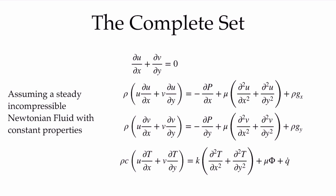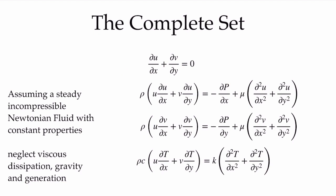To solve for the velocity and temperature profile, we now have four equations for four unknowns: the two velocity components, the temperature, and the pressure. Rather than solving them directly, let's think about the functional form of these equations. Neglecting viscous dissipation, gravity, and generation, the x-momentum equation looks very similar to the energy equation — one has the u component of momentum, the other has temperature — so we expect strong parallels between the temperature field and the velocity field.